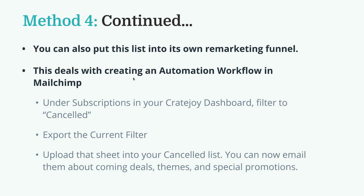Besides one-off emails, you can put canceled customers into their own remarketing funnel using MailChimp automation workflows. Take the same canceled list, go to MailChimp's automation section, create a new workflow, assign the canceled list to it, and build a four-to-six-part email series sent over a 90-day period — offering special discounts, gathering data, or sharing business updates to try to win those customers back.